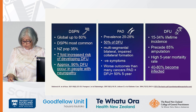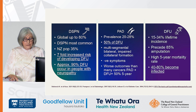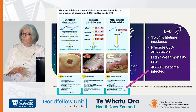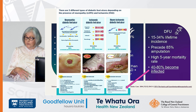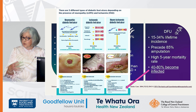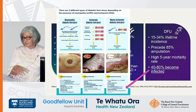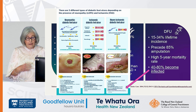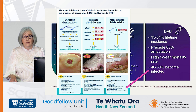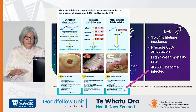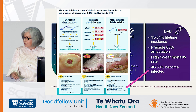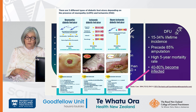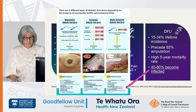Foot ulcers precede 85% of amputations and there's a really high mortality rate. Between 40 to 80% of diabetic foot ulcers will become infected. It's important to know the foot in front of you — what type of ulcer is presenting — because neuropathic ulcers will be referred to your high-risk foot clinic or diabetes foot clinic at the hospital. Ischaemic ulceration goes to vascular first. 50% from overseas studies show a mixed aetiology of neuropathic and ischaemic, and those ulcers have a really high propensity for infection.